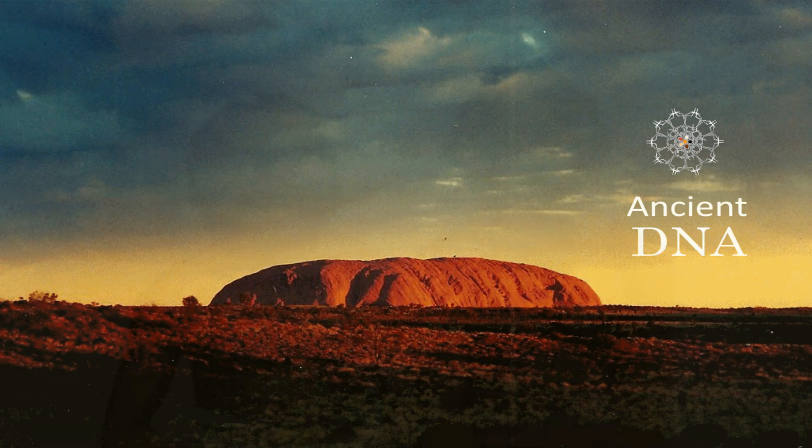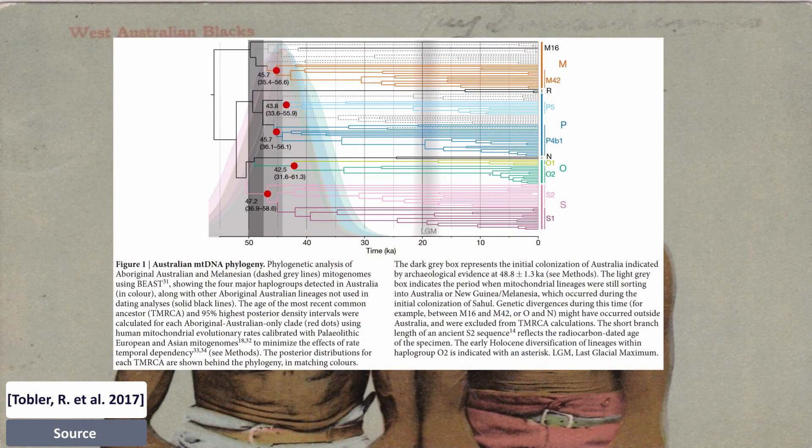Phylogenetic analysis of Aboriginal Australian and Melanesian mitogenomes enables determining the age of the most recent common ancestor, together with archaeological evidence for the initial colonization of Australia about 50,000 years ago.